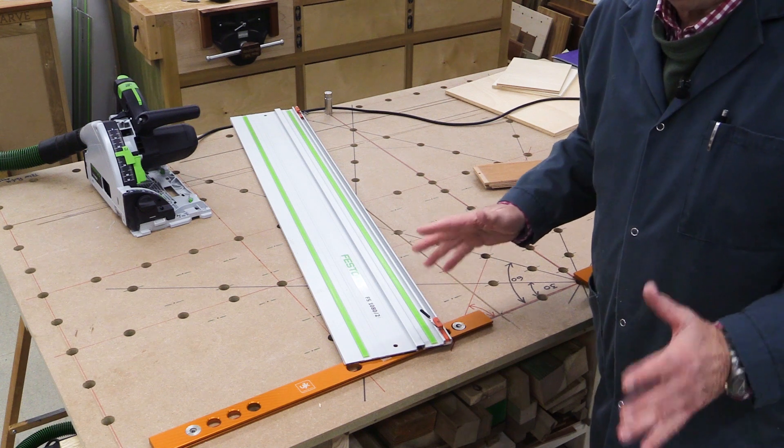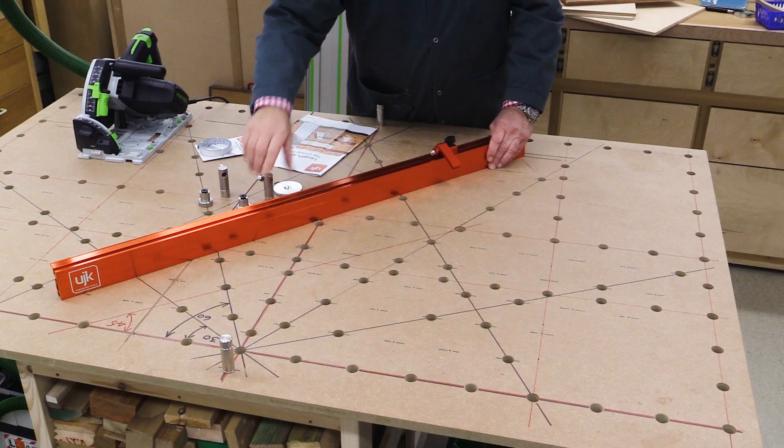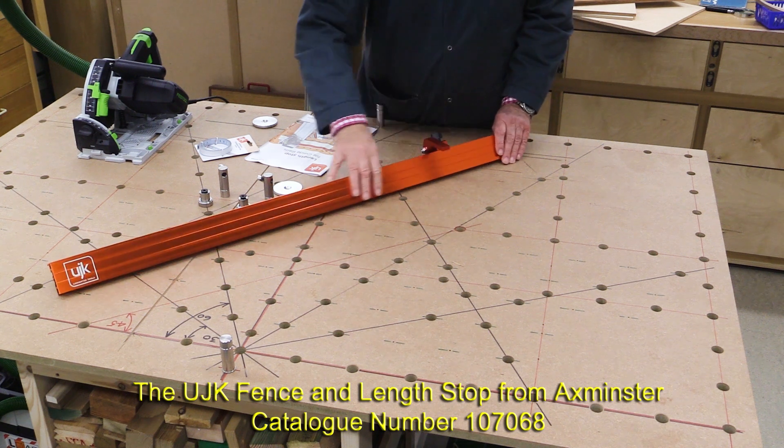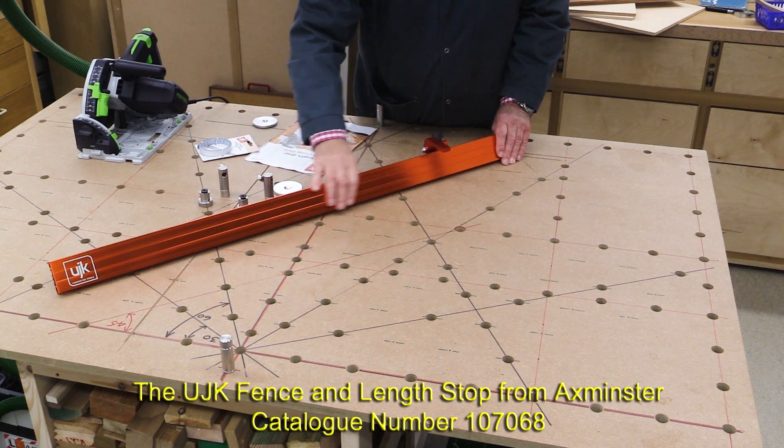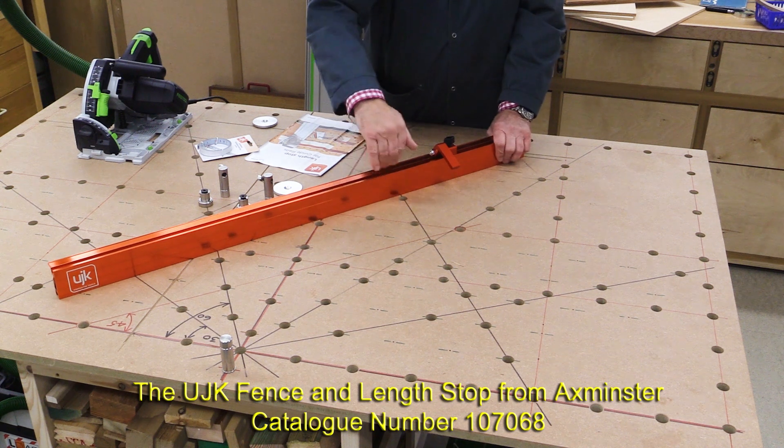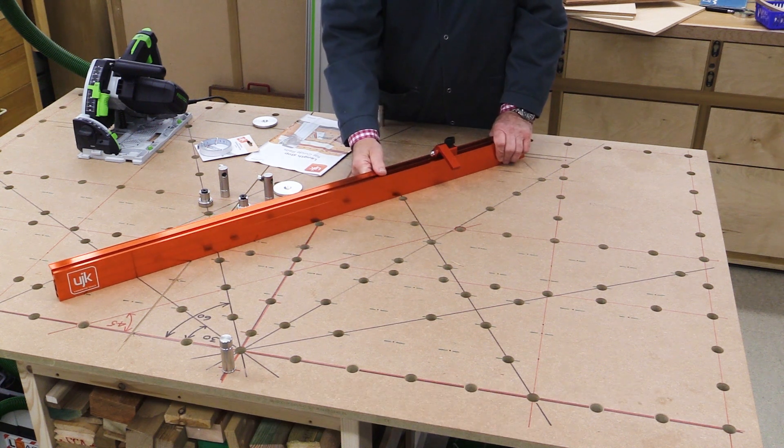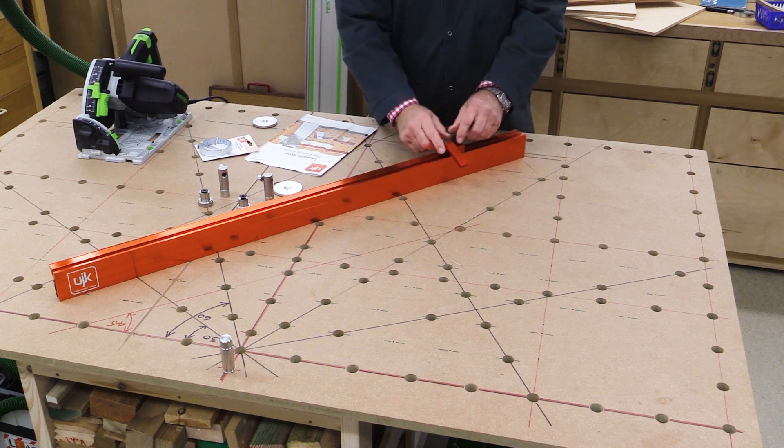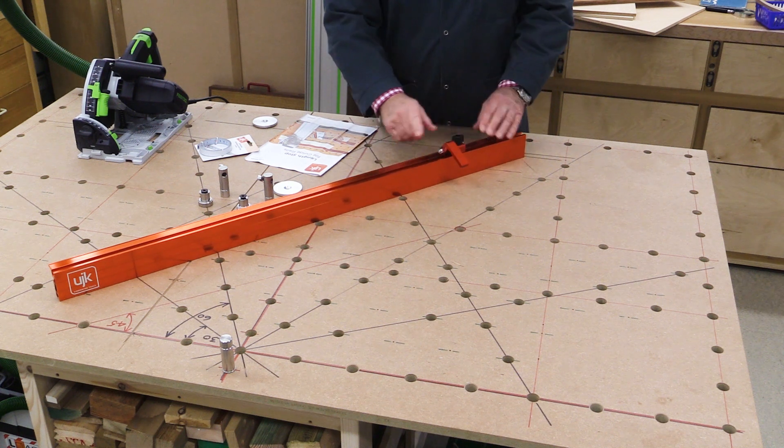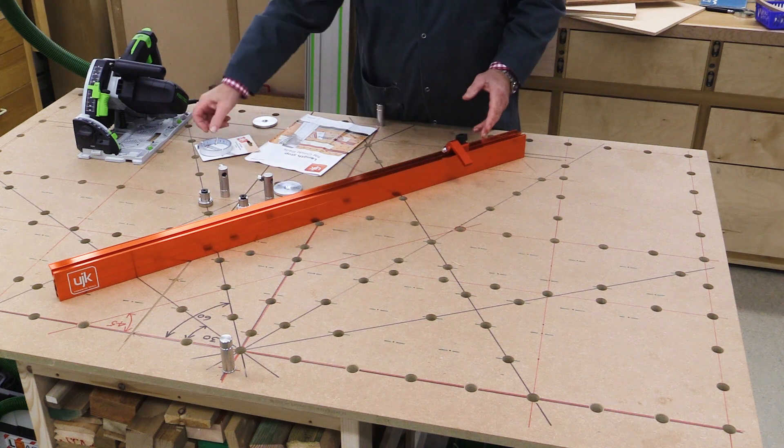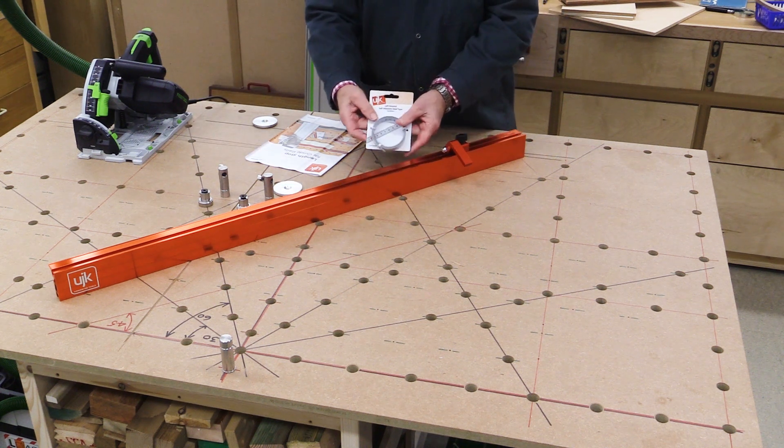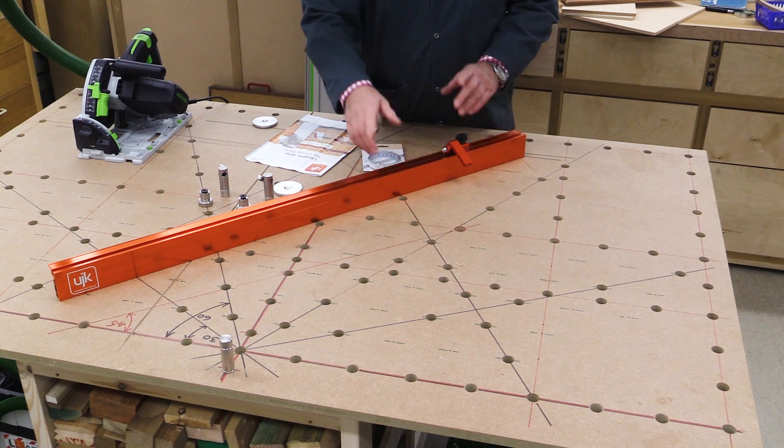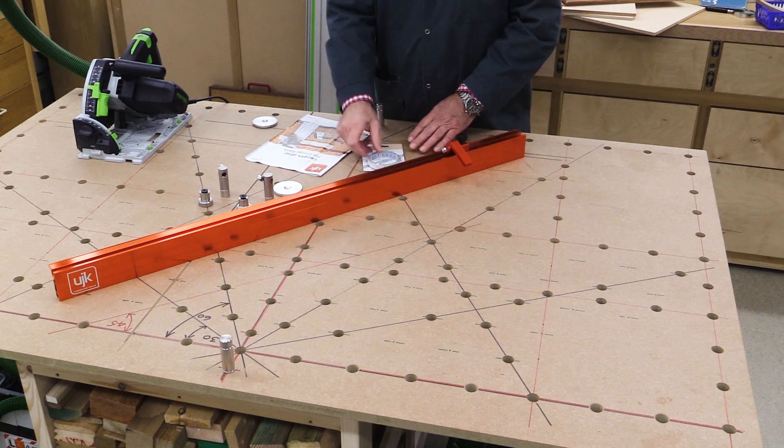And here we have the length stop. Now it consists of a fence piece which is here, quite a tall extruded piece of aluminium. It has a length stop here which can be positioned and fixed in place. In order to fix this where you want it, there is a stick-on scale which you can stick on and get it in the right place when you're setting things up. I'll show you that in a minute.